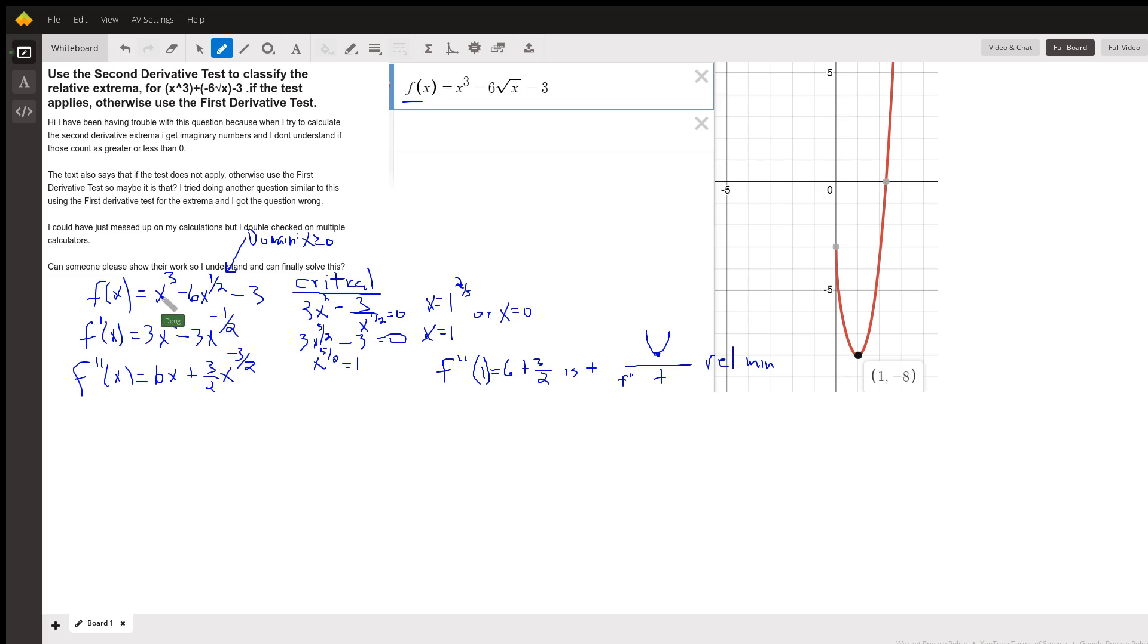When we find f prime, we'll get 3x squared, 1 half times the negative 6 is negative 3, x to the minus 1 half. While we're at it, we'll find the second derivative. 2 times 3 is 6x, plus 3 halves, x to the minus 3 halves.